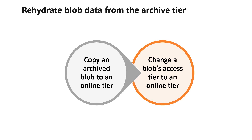The second option is to change a blob's access tier to an online tier. You can rehydrate and unarchive a blob to hot or cool by changing its tier using the Set Blob Tier option.